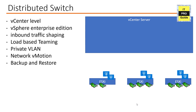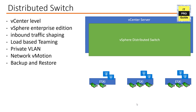Looking at the picture, we have three ESXi hosts, each with three physical network adapters, and we have VMware vCenter Server with these three ESXi hosts added to it. I want to create a distributed switch in this vCenter Server and add ESXi hosts to it so that all the virtual machines across all ESXi hosts can connect to that distributed switch, enabling central configuration and management from vCenter Server.